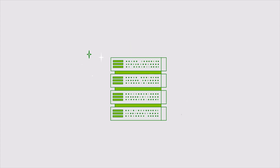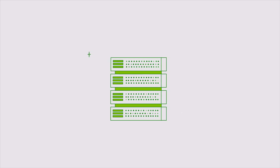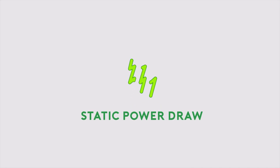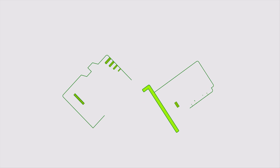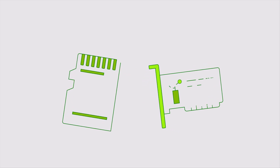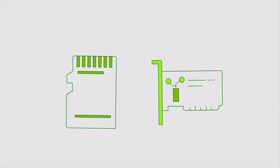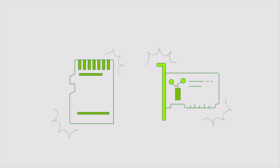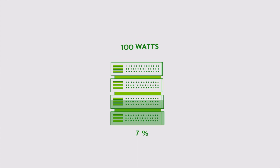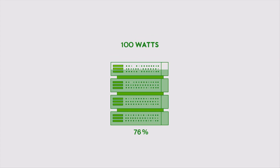Servers become more efficient the more they are used, and there are various reasons for this. One of them is static power draw — things like memory or your network card consume the same electricity regardless of how much the server is being used.